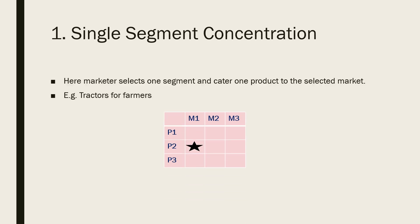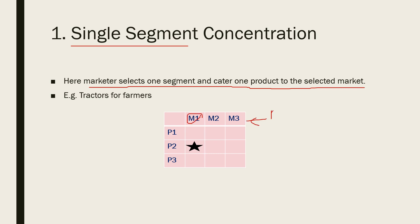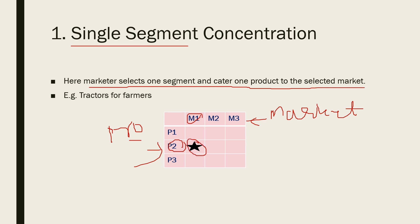First is single segment concentration. Here the marketer selects one segment and caters one product to the selected market. In the diagram, M1, M2, M3 are markets and P1, P2, P3 are products. Single segment means one product sold in only one market. For example, tractors for farmers — tractors are sold only to farmers in a single market.